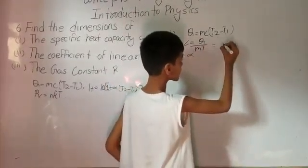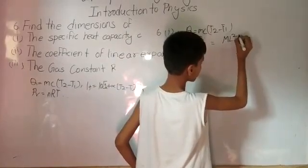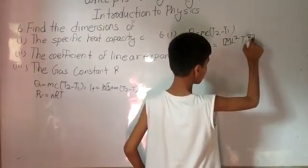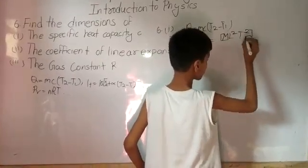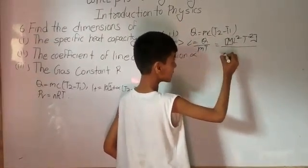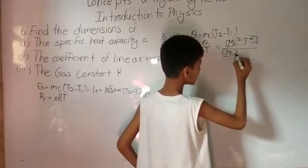So we know for Q it is ML square T power minus 2. The dimensional formula for Q is ML square T power minus 2. Now for M it is M itself. For T it is K.